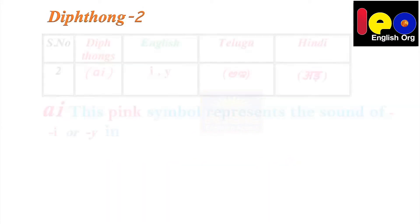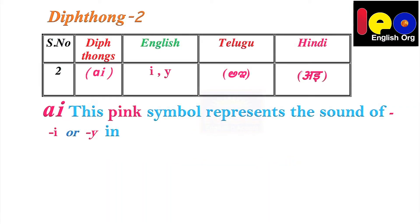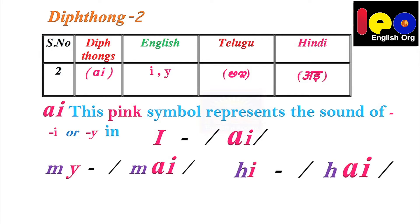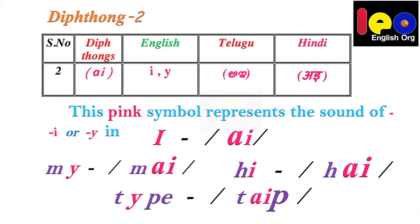Diphthong 2. This pink symbol represents the sound of I in 'I', Y in 'my', I in 'hi', Y in 'type'. It means the sound of I is not 'I', it is 'AI'. The sound of 'my' is 'mai'. You should not say 'hi', say 'hai'. You should not say 'type', say 'taip'. So AI stands for the sound of I.